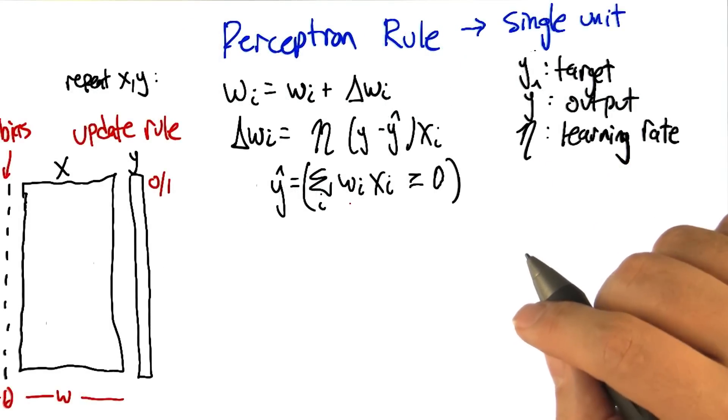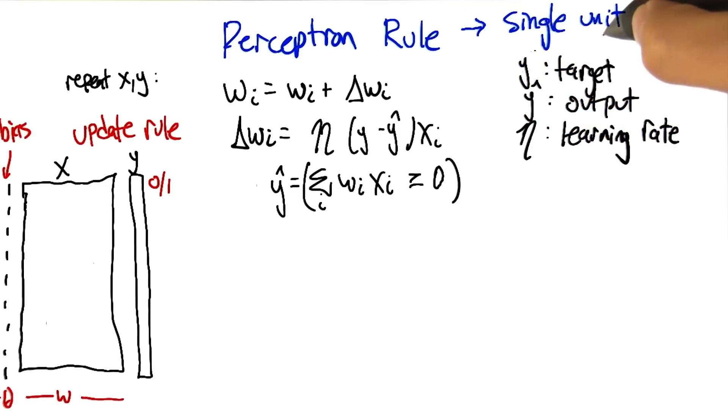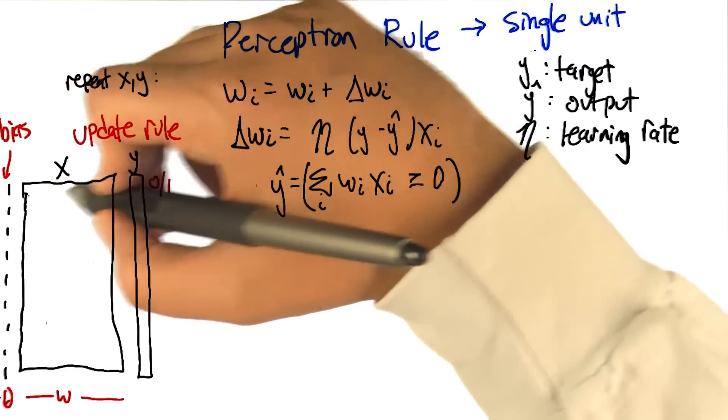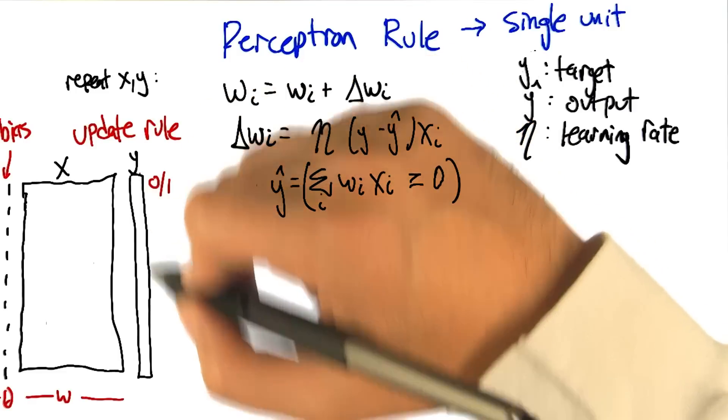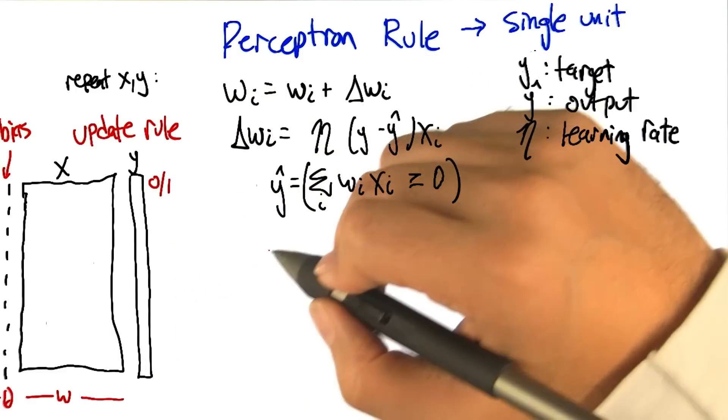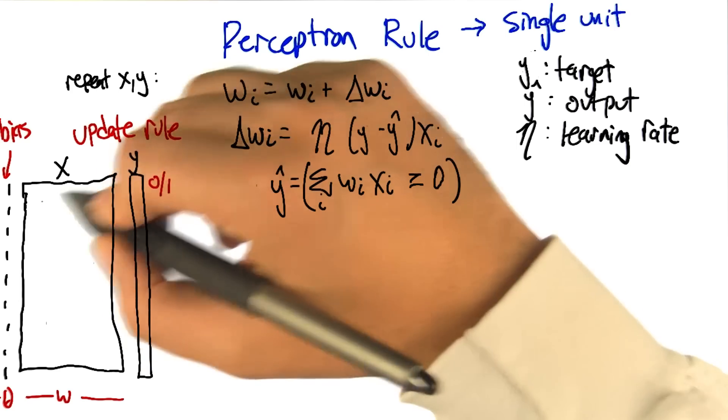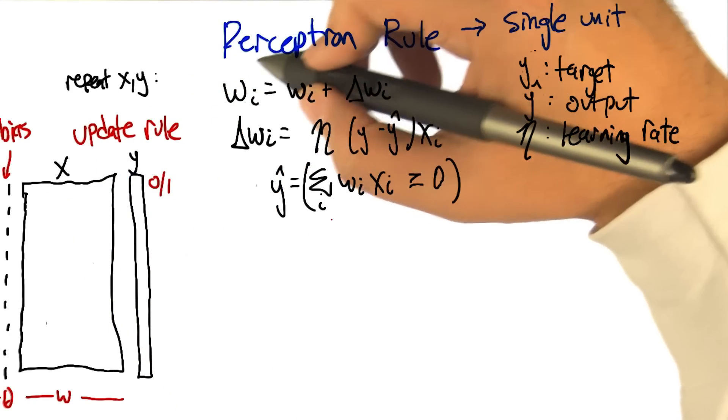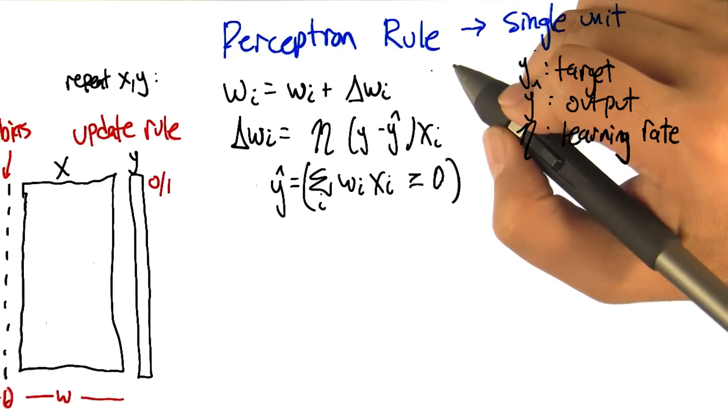All right, so what we need to talk about now is the perceptron rule, which is how to set the weights of a single unit so that it matches some training sets. So we've got a training set, which is a bunch of examples of x, these are vectors. And we have y's, which are zeros and ones, which are the outputs that we want to hit. And what we want to do is set the weights so that we capture this same data set. And we're going to do that by modifying the weights over time.